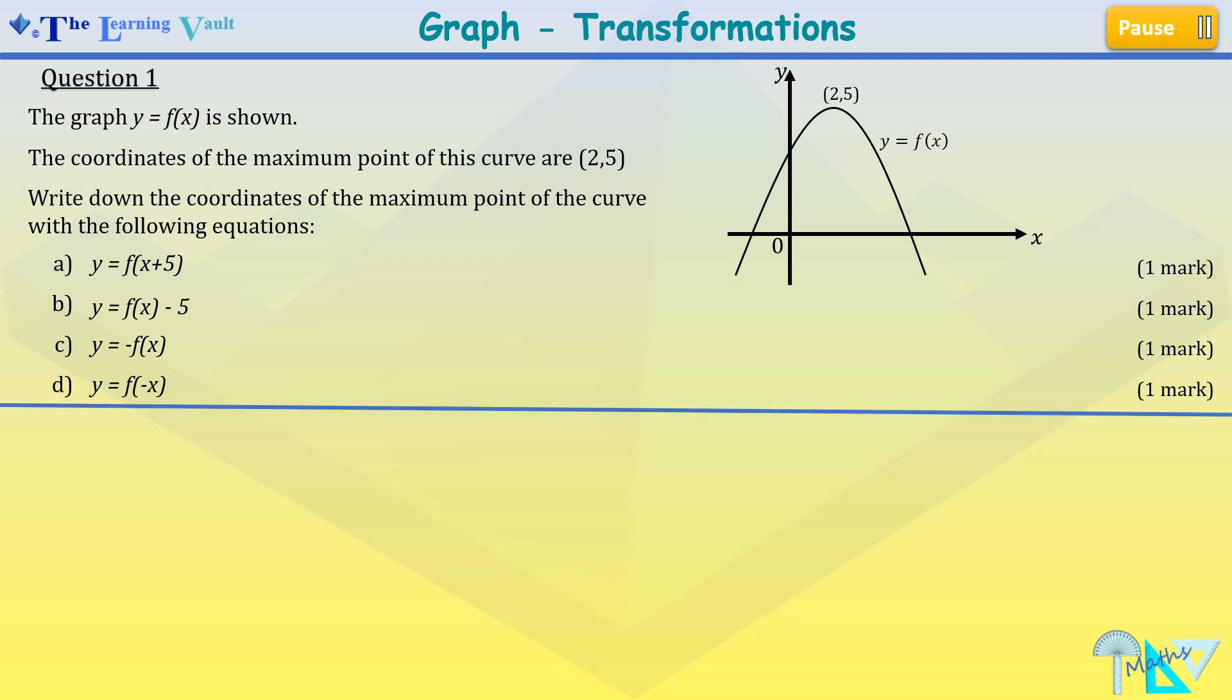Now part a of the question is telling us to find the coordinates of the maximum point of the curve when y equals f in bracket x plus 5. Now this is a horizontal translation, 5 units to the left. So we have it as 2 minus 5 comma 5. So the new coordinates are negative 3 and 5, and with this you get your full one mark.